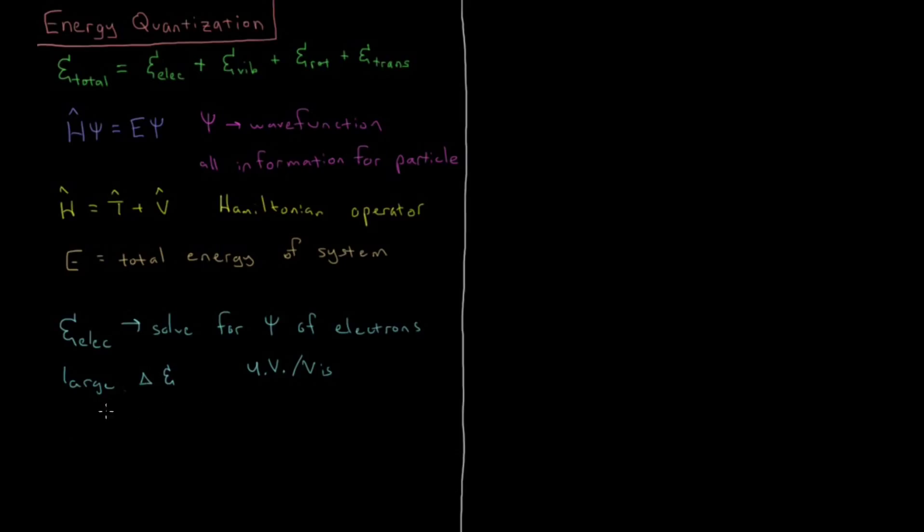Next we have vibrations. We have that the energy for vibration which is quantized according to a certain quantum number is Planck's constant times a given frequency times a quantum number n plus one half, where n is some integer starting at zero and going up.